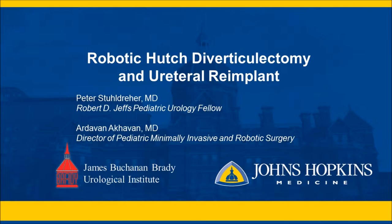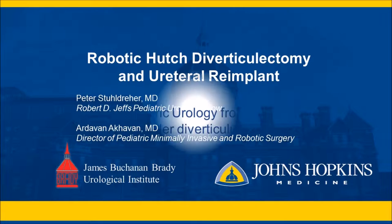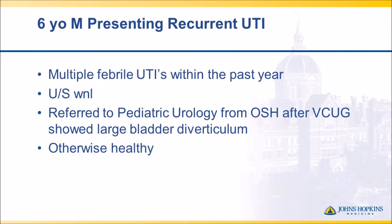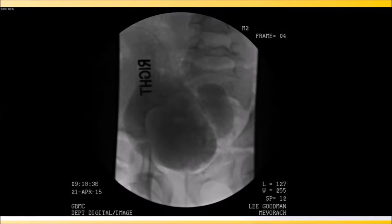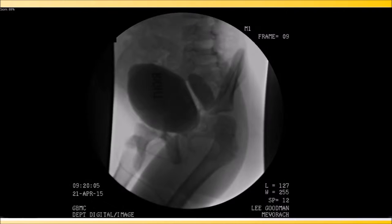Robotic Hutch diverticulectomy and ureteral re-implant. This is a six-year-old male who was referred to our practice presenting with multiple recurrent UTIs in the past year, with a normal ultrasound and VCUG showing a large bladder diverticulum. He was otherwise healthy. The large bladder diverticulum can easily be seen on VCUG with no evidence of reflux bilaterally.